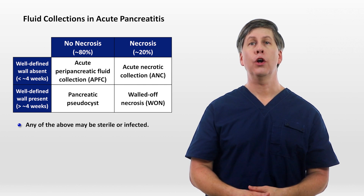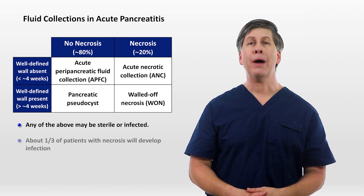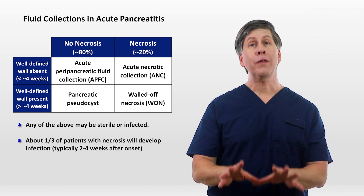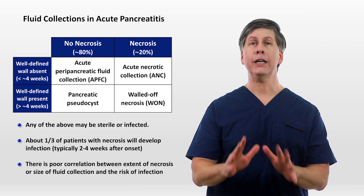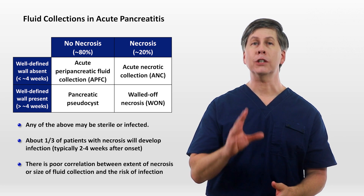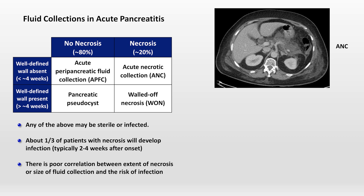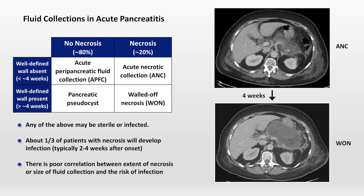Any of these collections may be sterile or infected, though infections are more likely in necrotic collections. About one-third of patients with necrosis will develop infection, which typically comes two to four weeks after illness onset. Although these collections can look scary radiographically, there is poor correlation between extent of necrosis or size of collection and the risk of infection. Here is an example of an acute necrotic collection on an abdominal CT. To orient you, here is the liver, here are the kidneys, and this black stuff is just normal air inside the lumen of the GI tract. This grayish haze is edema and poorly demarcated fluid in the region where the pancreas is supposed to be. After about four weeks, this patient went on to develop walled-off necrosis — now there is a thin but well-defined wall surrounding the fluid, and there still appears to be some solid necrotic elements inside.